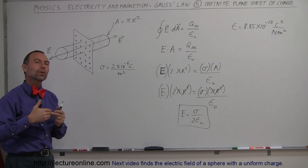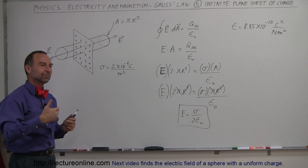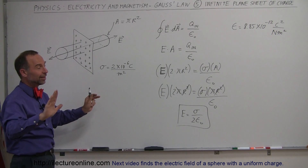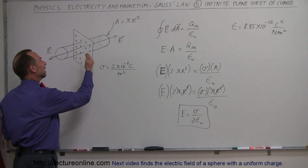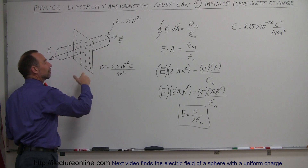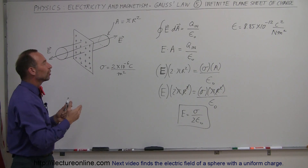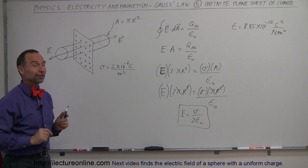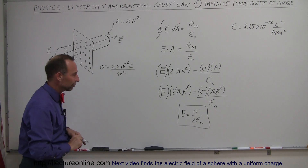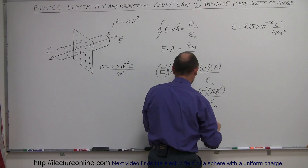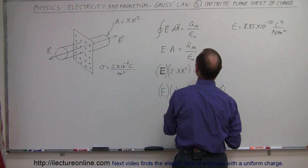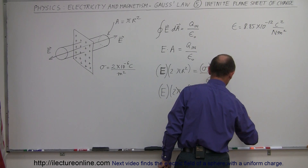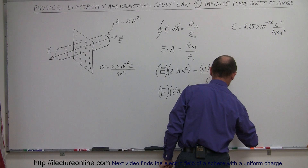Of course, that's only up to a limit. If you go 10, 20, or 30 feet away from the sheet and the sheet is only infinite within a reasonable distance, it becomes effectively not infinite when you get too far away, and then we need to look at this in a very different way. So sigma equals 2 times 10 to the minus 6 coulombs per square meter.